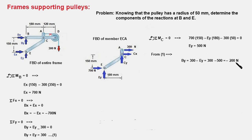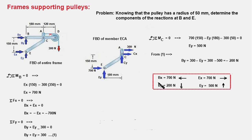This is a fairly simple exercise. The reaction force components at point B are BX and BY: 700 newtons and 200 newtons respectively, in the directions shown. The reaction components at point E are 700 newtons in the positive x direction and EY is 500 newtons in the positive y direction. So this is our answer.